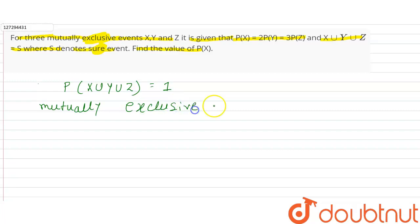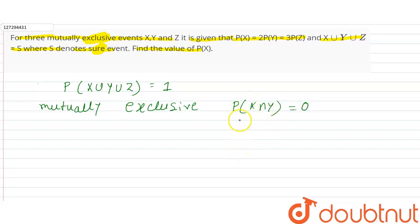Mutually exclusive means the intersection is 0. Therefore, probability of X intersection Y equals 0. Similarly, P(Y intersection Z) equals 0. Since the intersections are 0, the events are mutually exclusive.